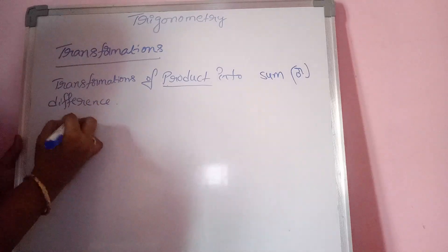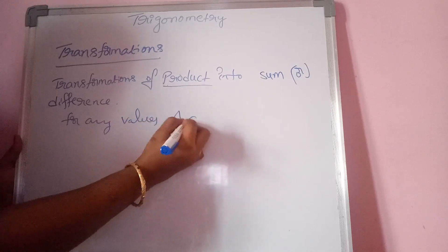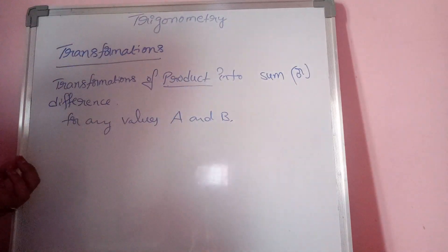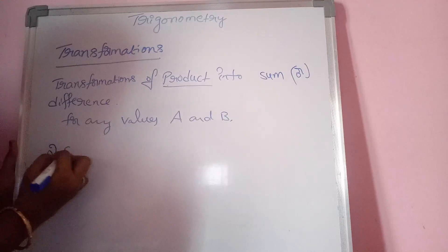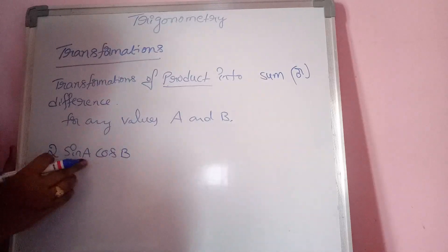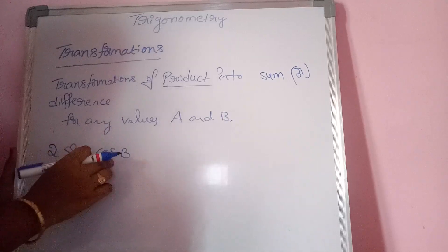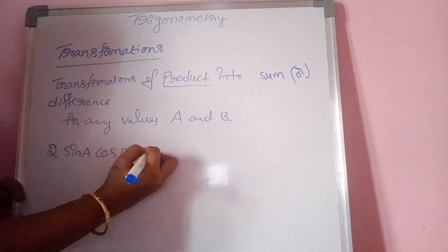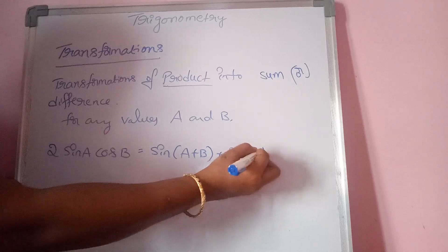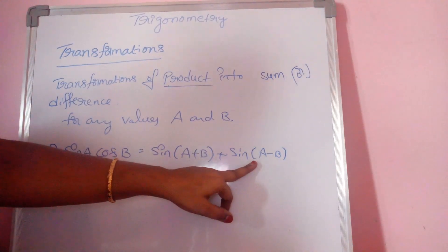We take any values A and B. The first formula: 2 sin A cos B is equal to sin(A+B) plus sin(A−B). Here, sin A and cos B are the product of two trigonometric values, and sin(A+B) plus sin(A−B) is the sum of two trigonometric functions.